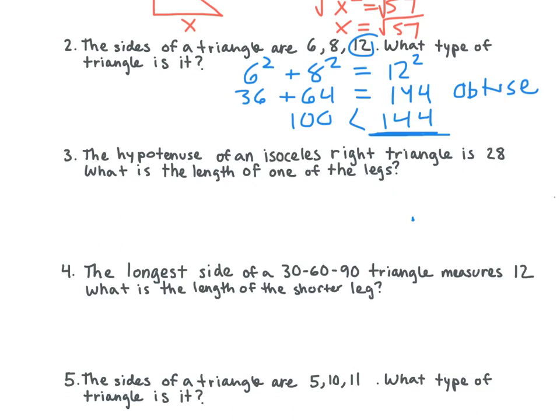The hypotenuse of an isosceles right triangle is 28. What is the length of one of the legs? What are we going to do first? Draw it out. So the hypotenuse is 28, and we know it's an isosceles right triangle. So what can we say the legs are going to be? X and X — they're the same thing.